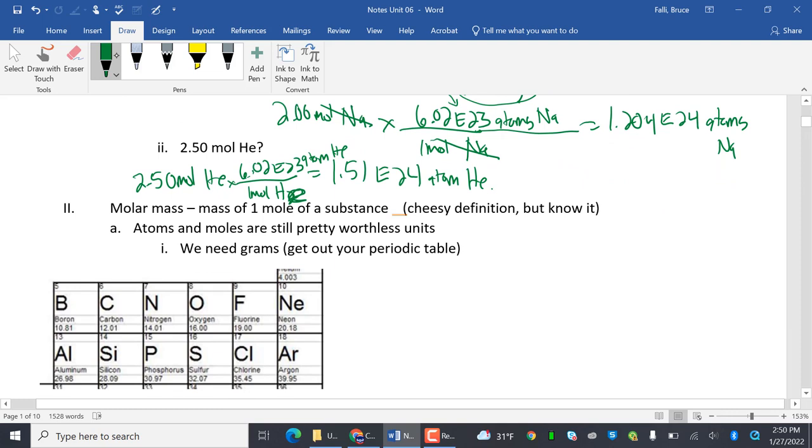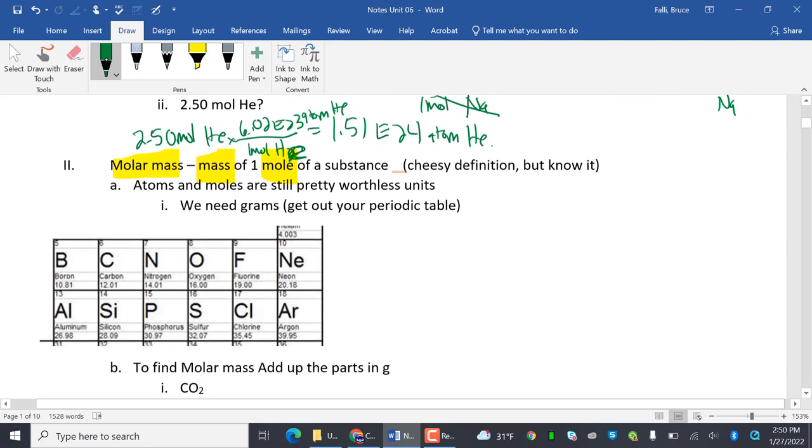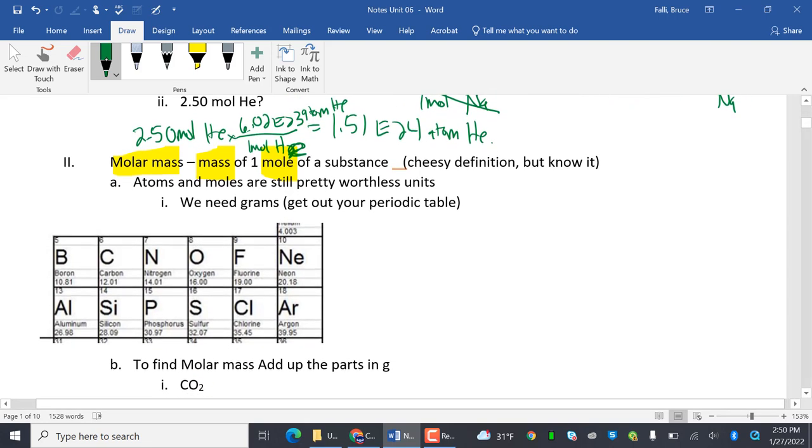Molar mass - mass of 1 mole of a substance. This is confusing. The molar mass, so it's the mass of a mole. So be aware of that. And molar mass means go to the periodic table. Atoms and moles are still pretty worthless units. So we need to get into grams. So we're going to get out our periodic table. And the periodic table tells us what a mole of each thing weighs.